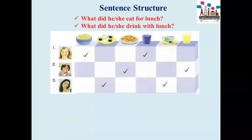Now we are going to look at the sentence structure. The sentence structure is: What did he or she eat for lunch? Another one: What did he or she drink with lunch? So we are going to look at number one.